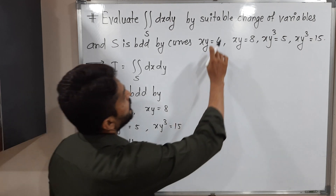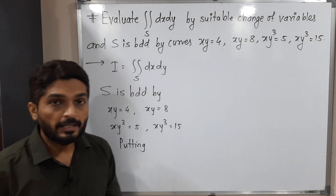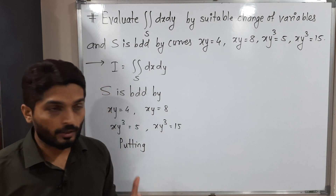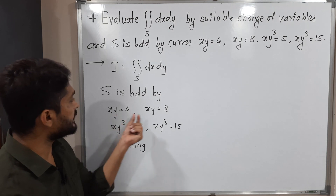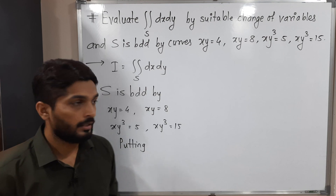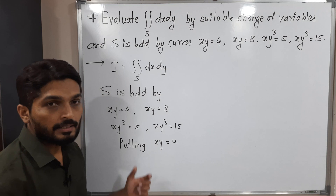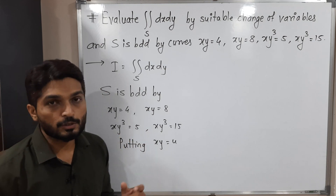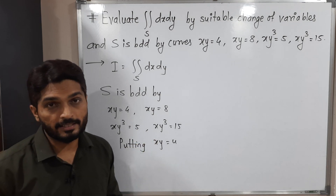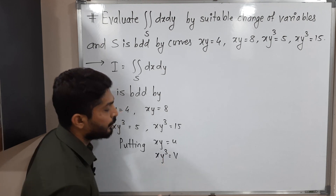The problem also mentions suitable change of variables, which means we have to put something. The question is what we have to put. Let us try to find some pattern. We can easily see xy = 4 and xy = 8, so in both equations the left-hand side has xy. So let us put xy = u. Similarly, in the remaining two equations we have xy³ on the left-hand side. So I am going to put xy³ = v.